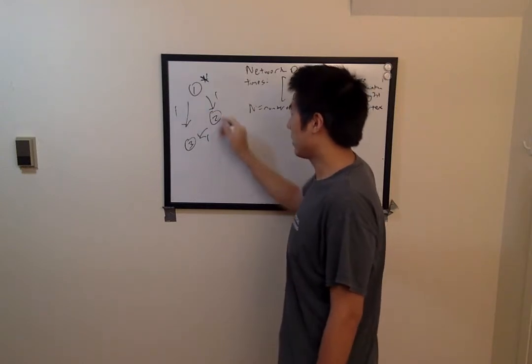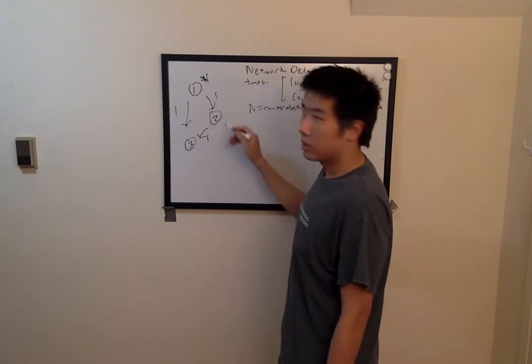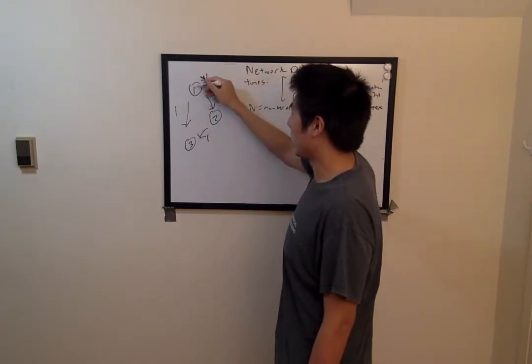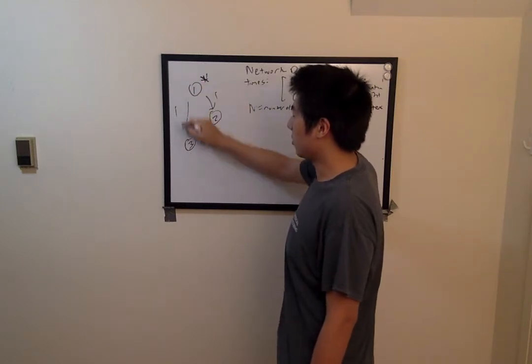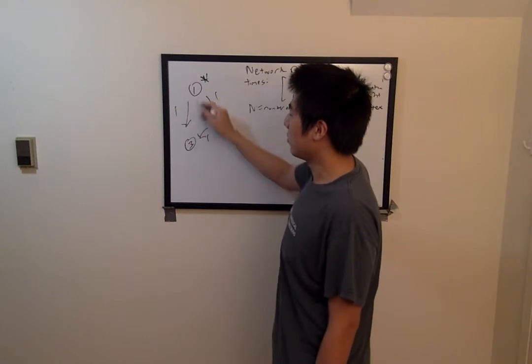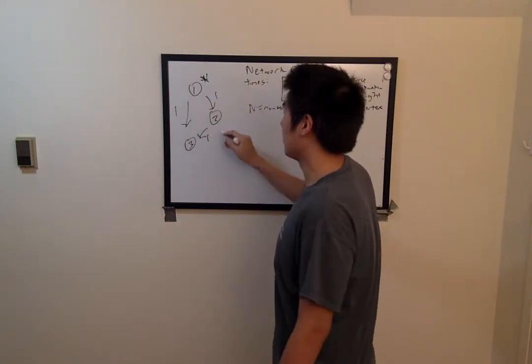and then travel again to vertex 3 in one unit of time. Note that it takes a full 2 units of time for it to travel from 1 to 2 to 3, but there's an alternative pathway for the signal to get from 1 to 3. And thus the minimum amount of time required for the signal to travel to all vertices is just 1.